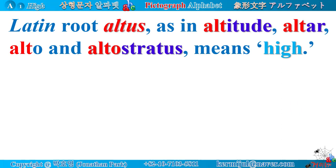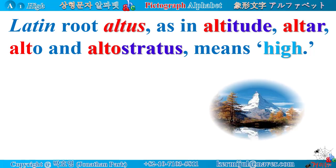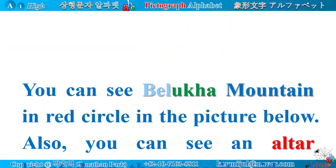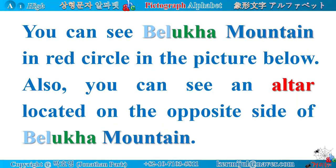The Latin root 'altus,' as in altitude, alter, alto, and altostratus, means high. The A-shaped white peak of the Alps on the right is called Matterhorn. You can see a cloud of altostratus in the sky, and the image of Matterhorn reflected on the surface of the lake is amazingly beautiful. You can also see Belukha Mountain marked in a red circle in the picture below.